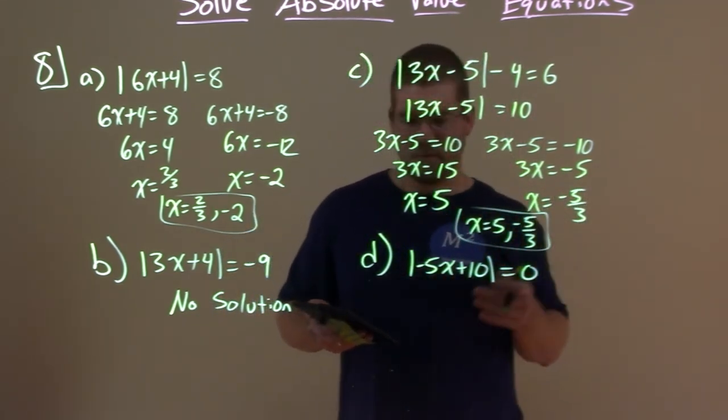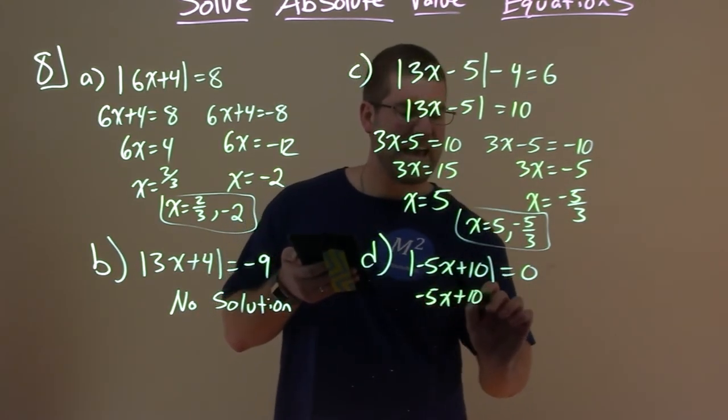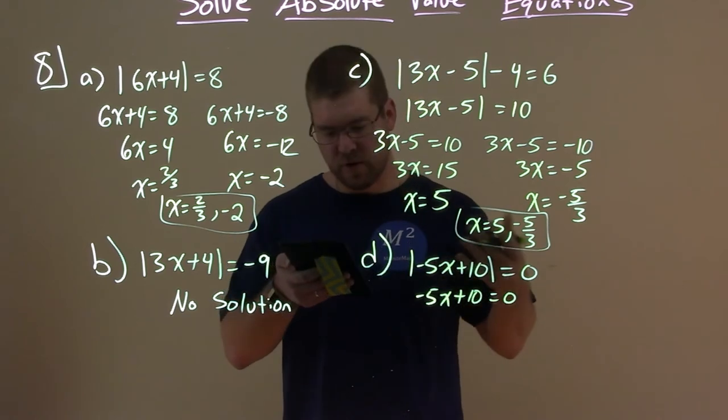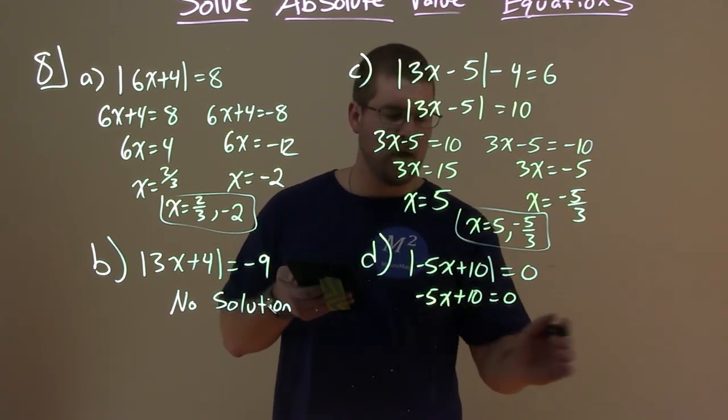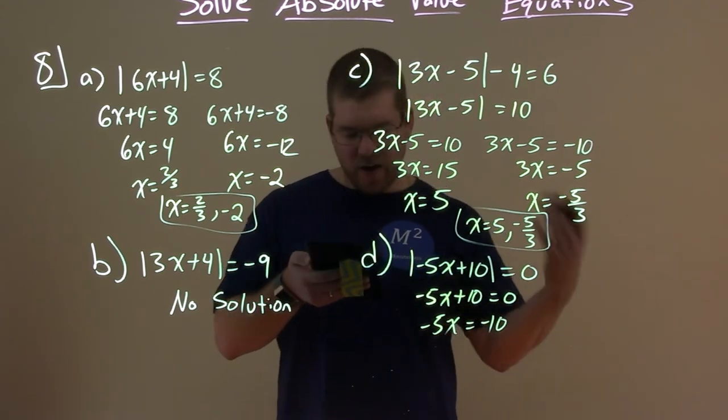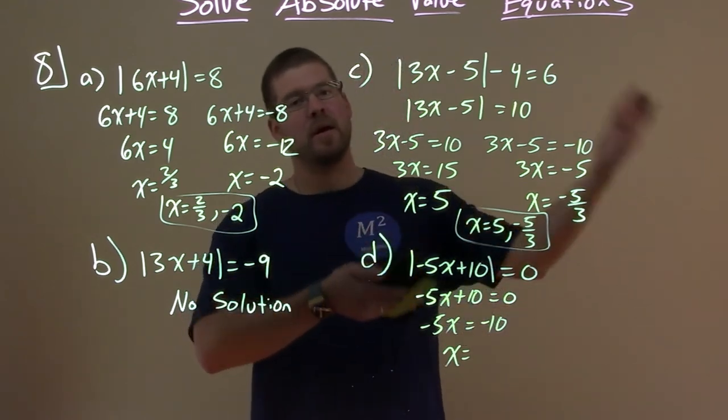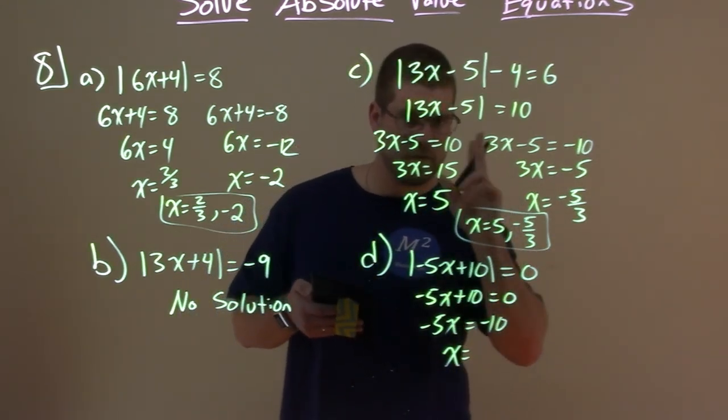So we just set negative 5x plus 10 equal to zero and solve for x just like any other equation. Subtract 10 from both sides. Negative 5x equals negative 10.